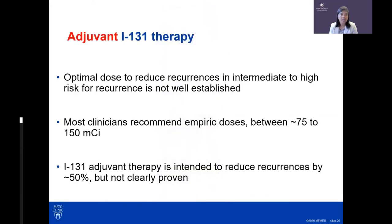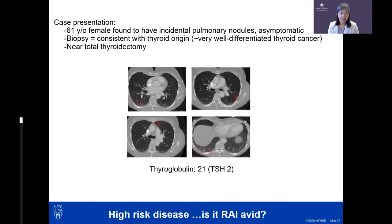Adjuvant I-131 therapy for intermediate to high recurrence risk: the optimal dose is not well established. Most clinicians consider doses between 75 and 150 millicuries. Doses at Mayo are often between 75 and 100 millicuries. The intent is to reduce recurrences — some say by 50 percent — though it's acknowledged that this reduction is not definitively established by clinical trials.